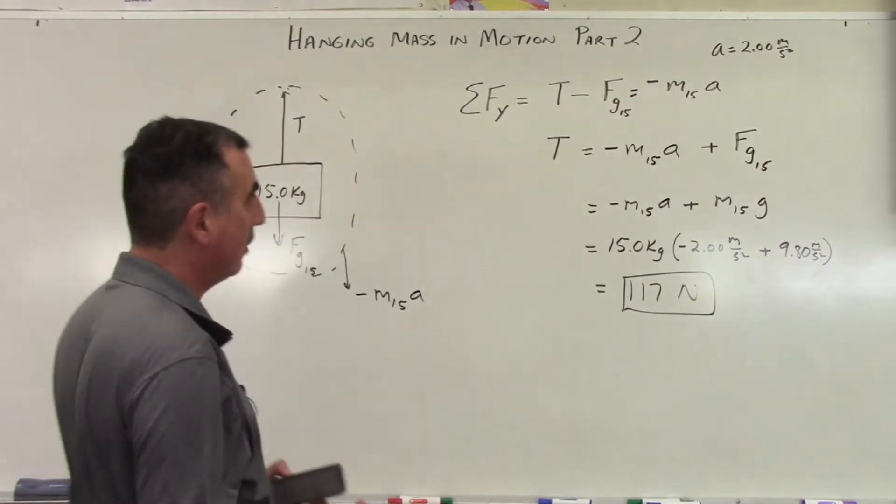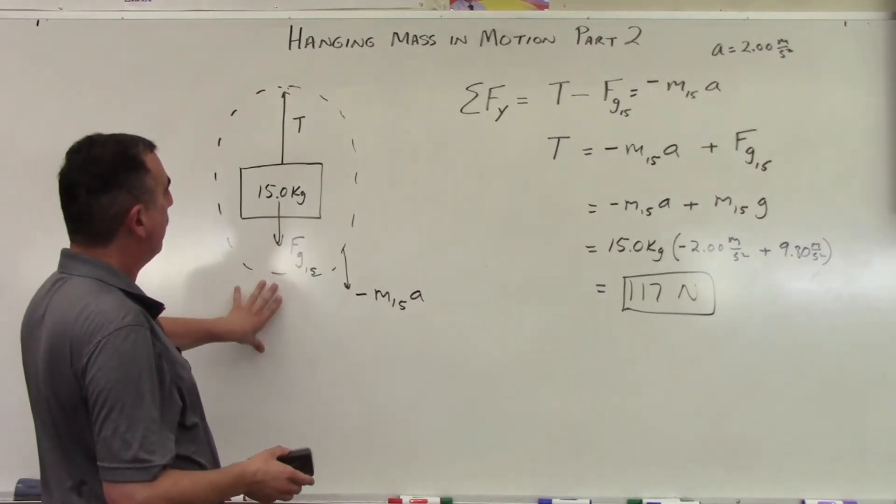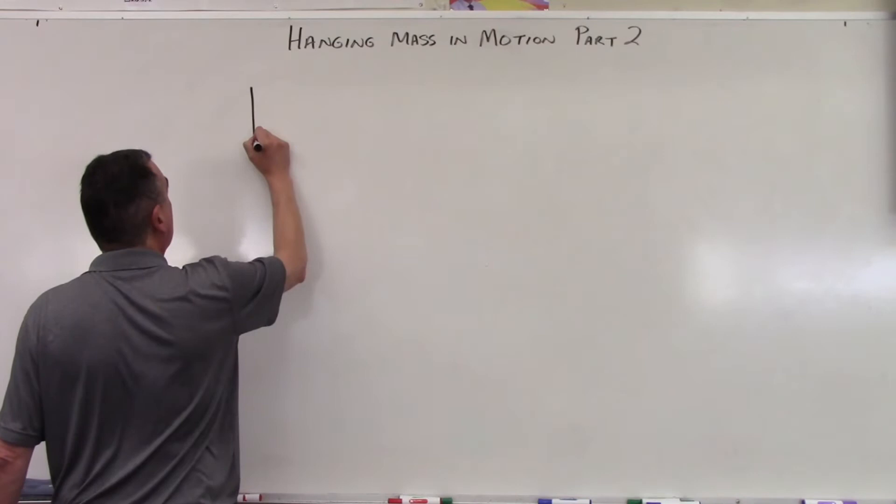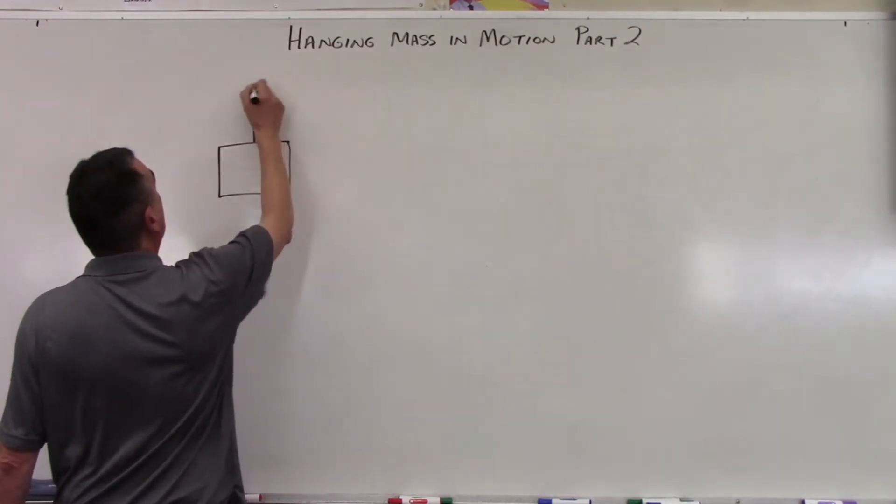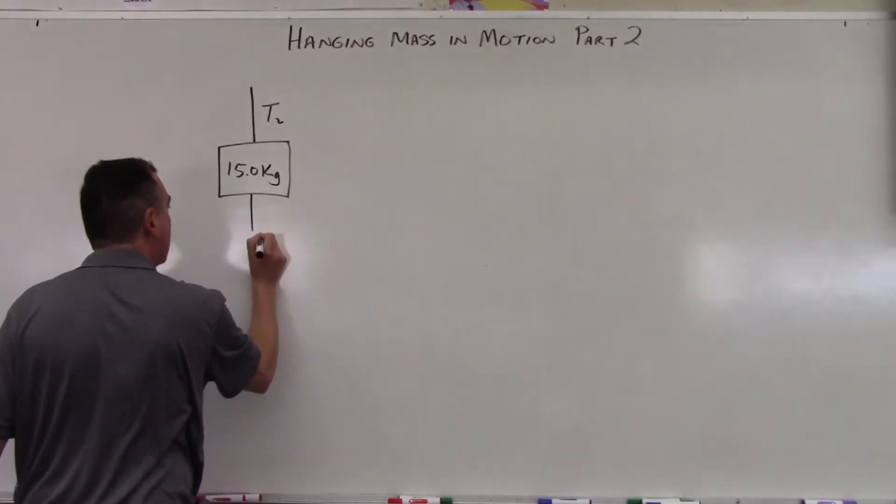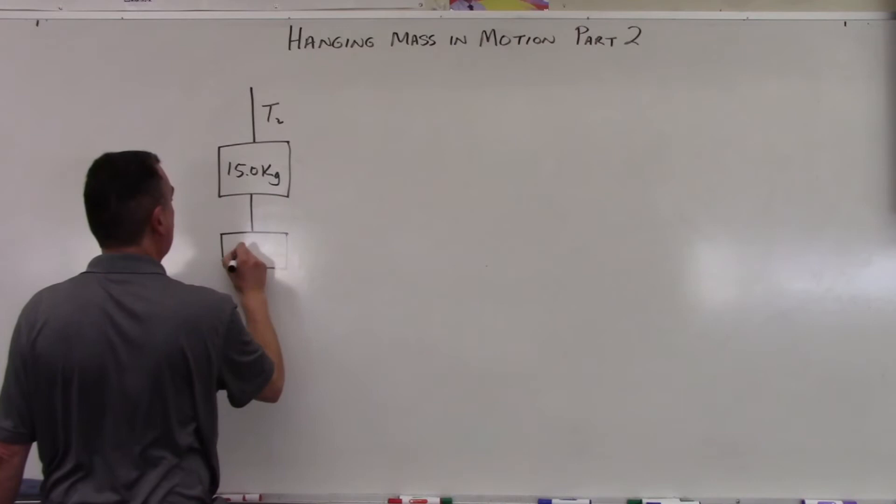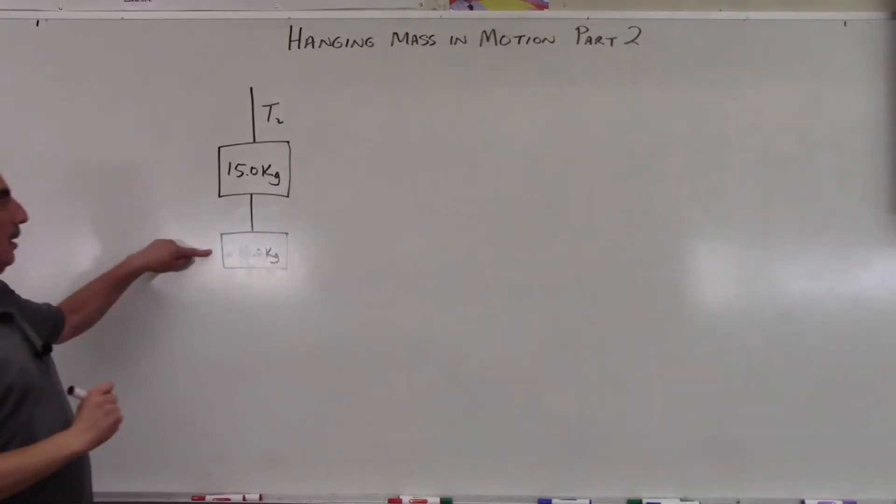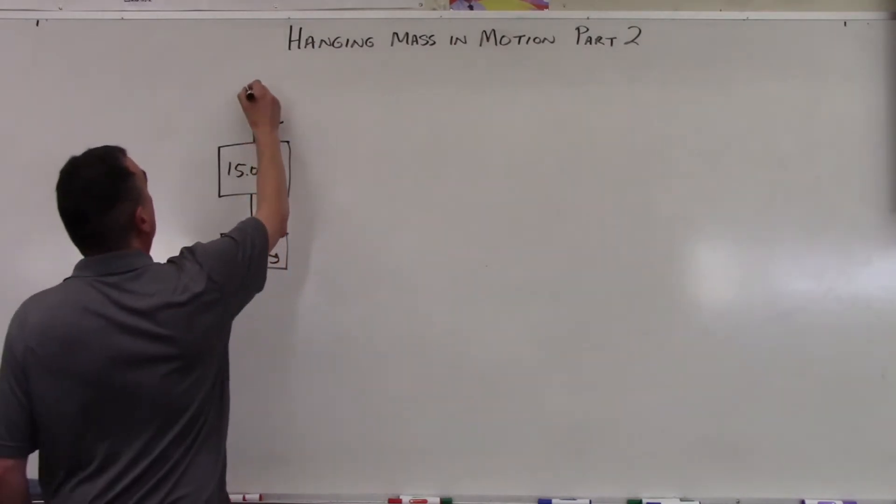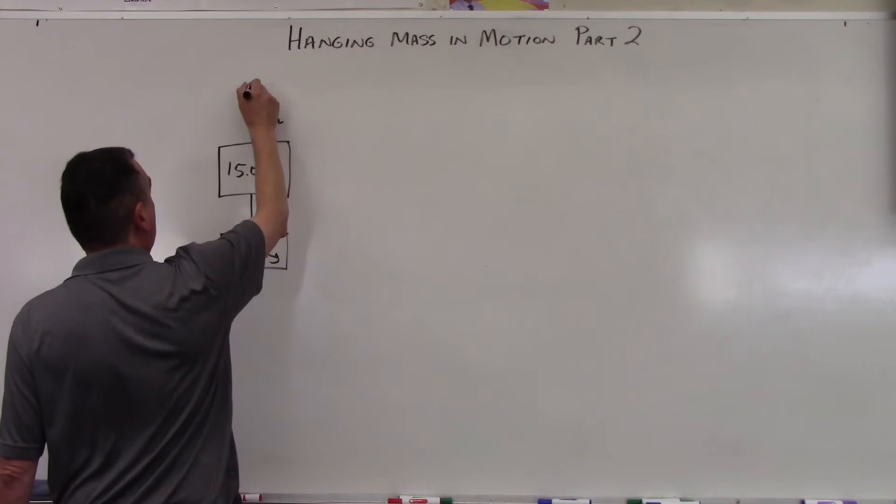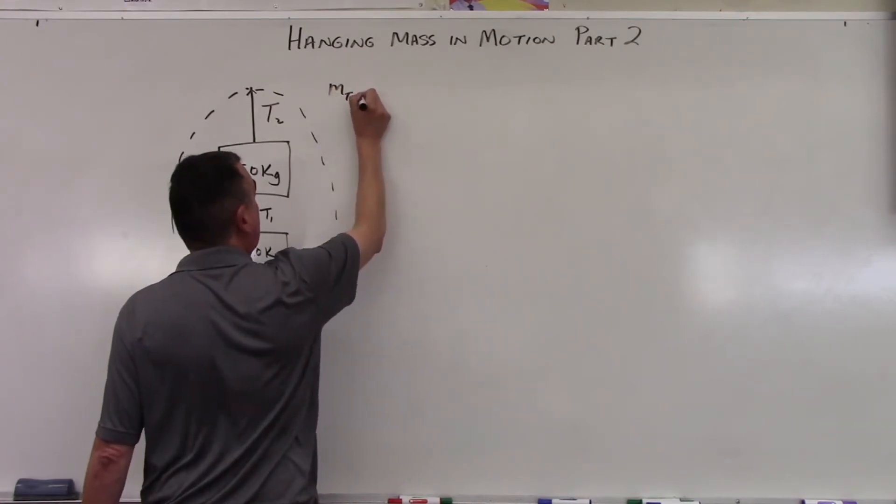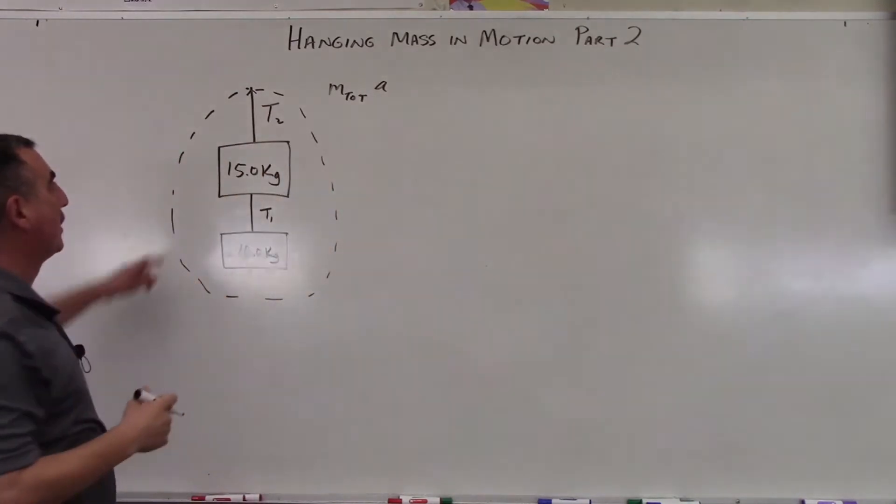So let's change the system up. Let's add another box to this system or another object and see what that's going to give us. We got tension. And let's make this the 15.0 kilograms. I'm going to call this T2 because I'm going to put a second object down here and I'm going to make it 10.0 kilograms and this is going to be tension one. Now let's make this whole system work itself downward.